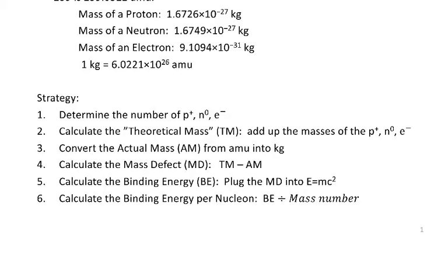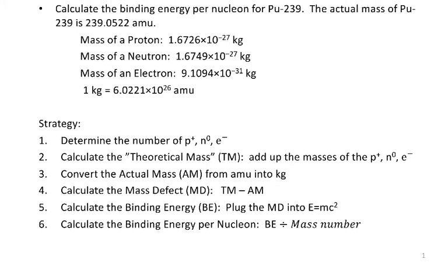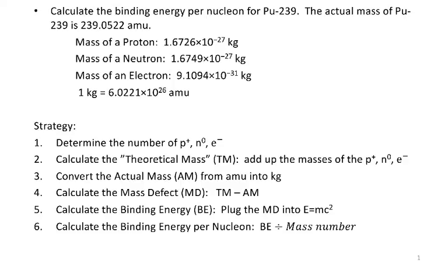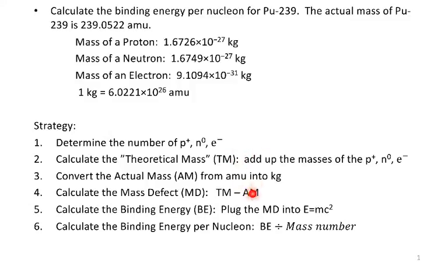The next thing we're going to do is convert the actual mass we were given from AMUs into kilograms, using the conversion factor we were given. We'll have the theoretical mass and the actual mass, and what we call the mass defect is the difference between these two — we take the theoretical mass and subtract the actual mass from it.